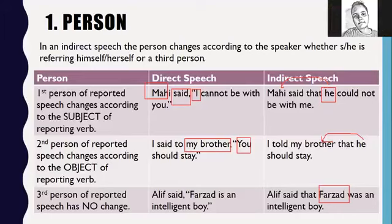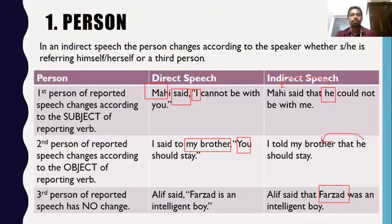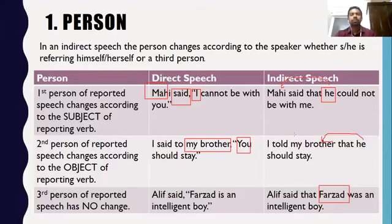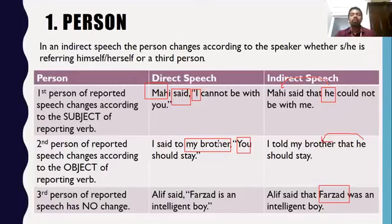A student asked: in 'Alif said, Farjad is an intelligent boy,' since 'Farjad is an intelligent boy' is present indefinite tense, on converting to indirect speech, it becomes past indefinite — because it's not a universal truth, it may change. It was someone's opinion. However, if Alif said 'we are mortal,' then you would say 'Alif said that we are mortal' — there would be no change of tense, because it is a universal truth.